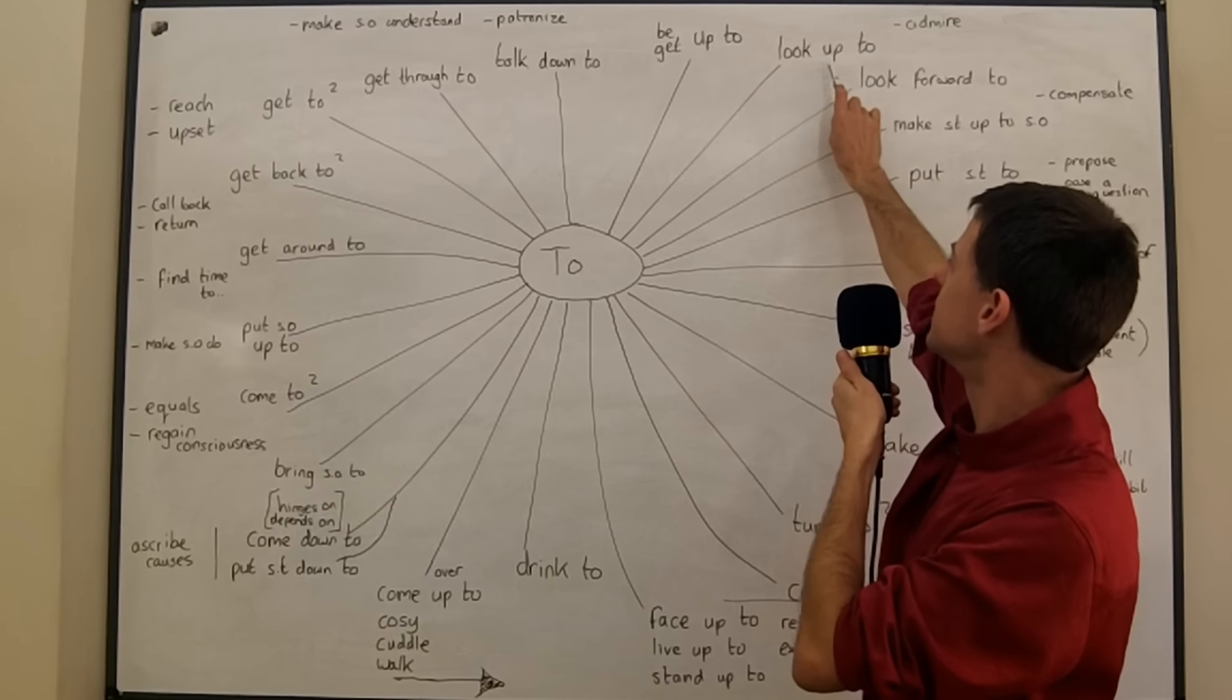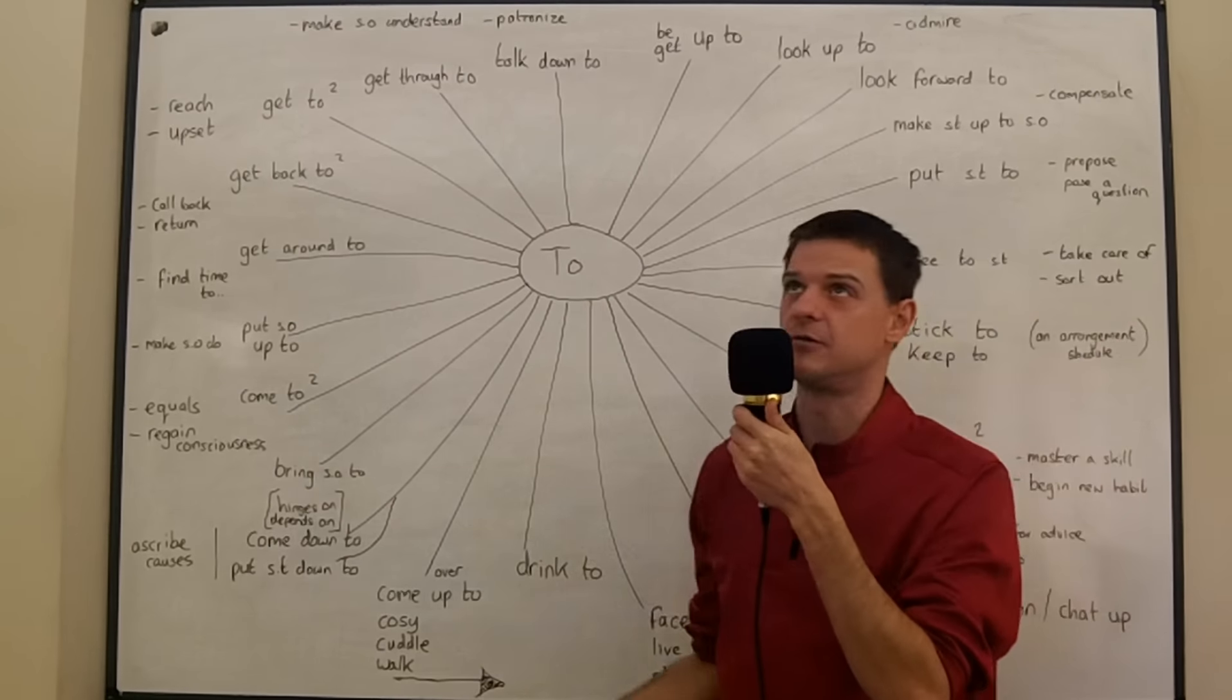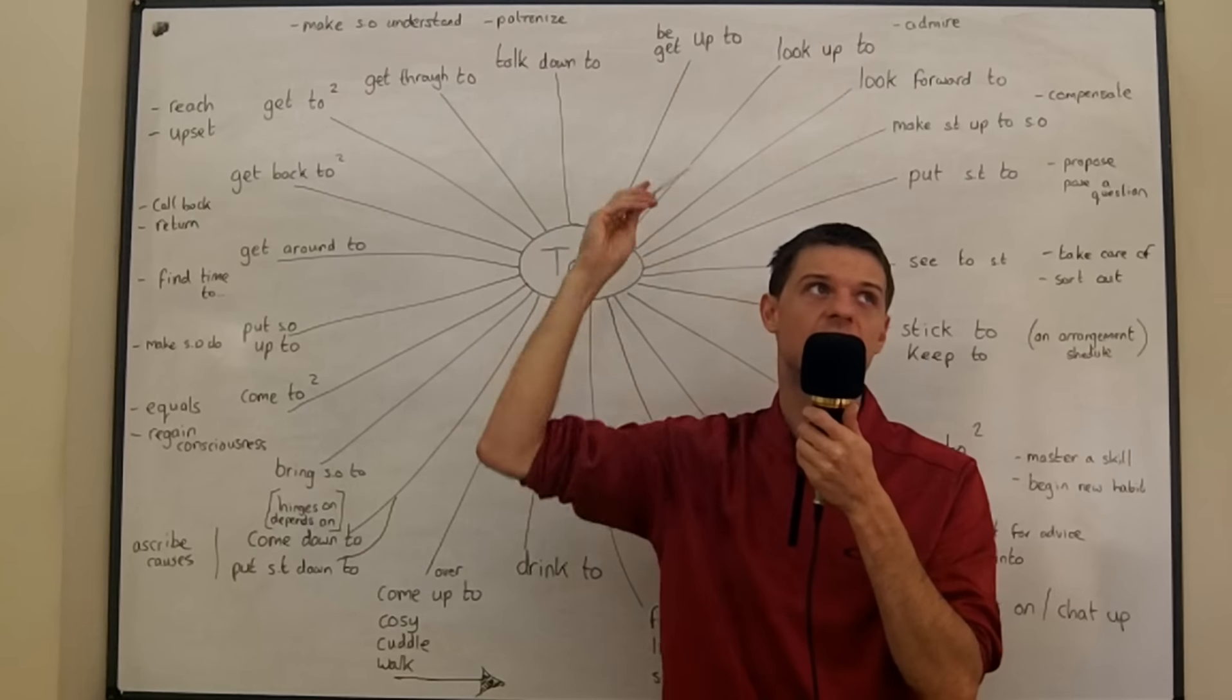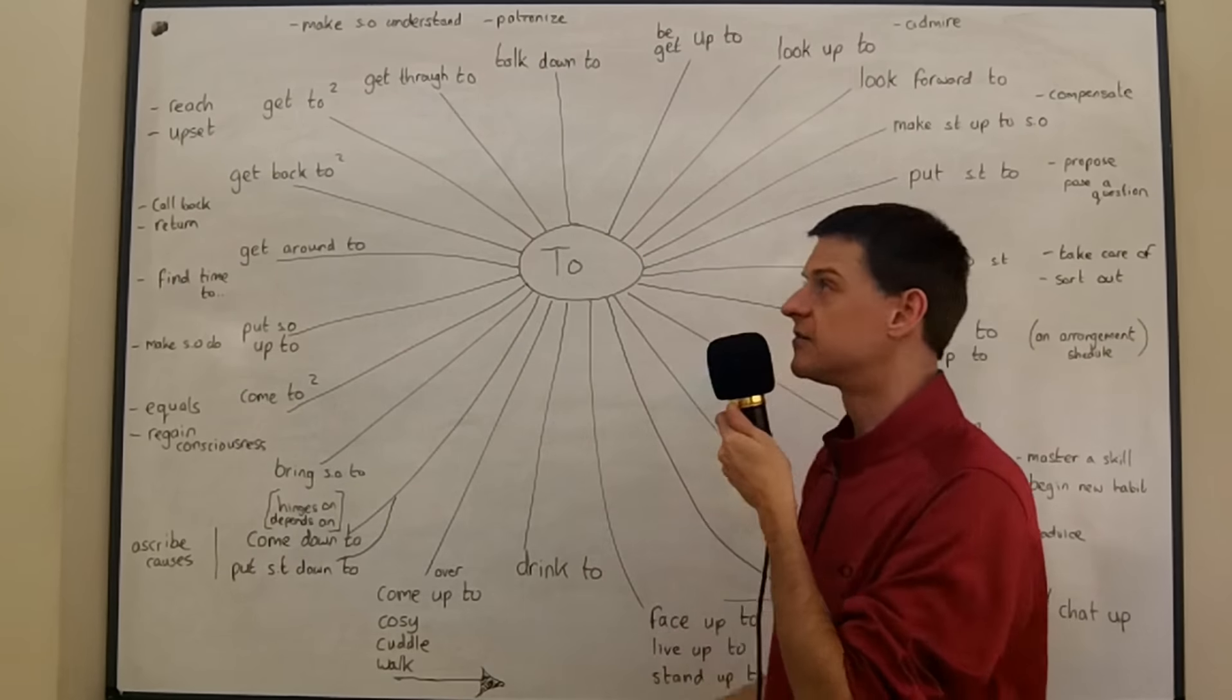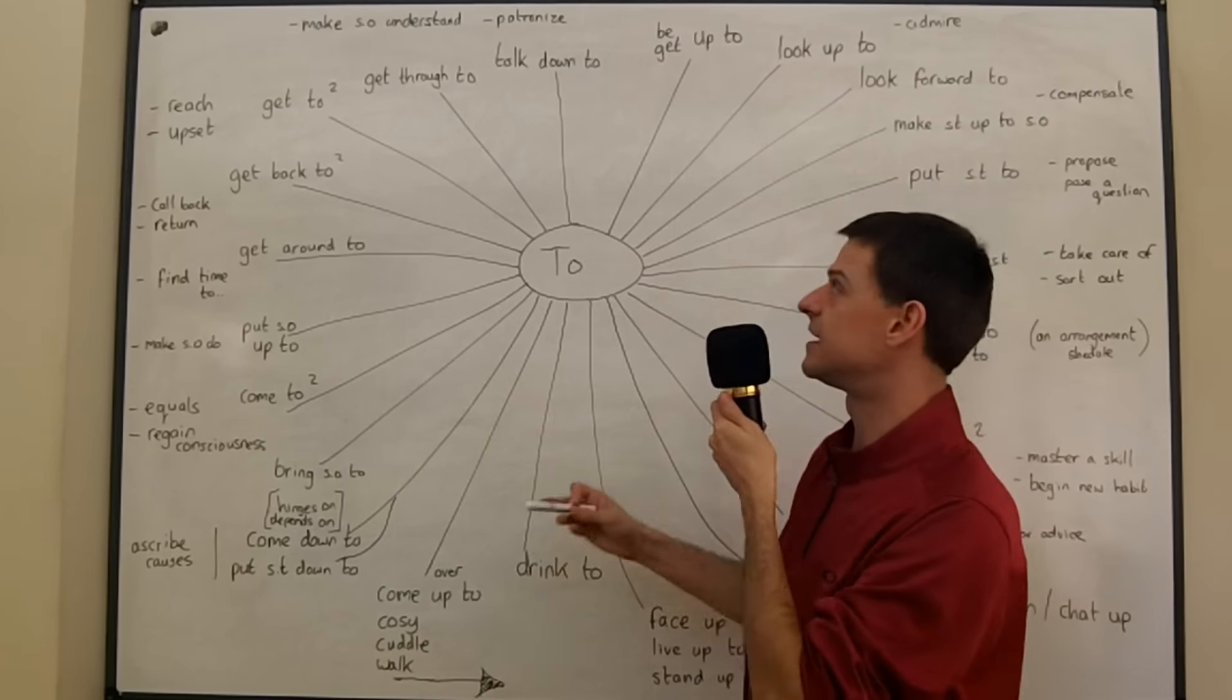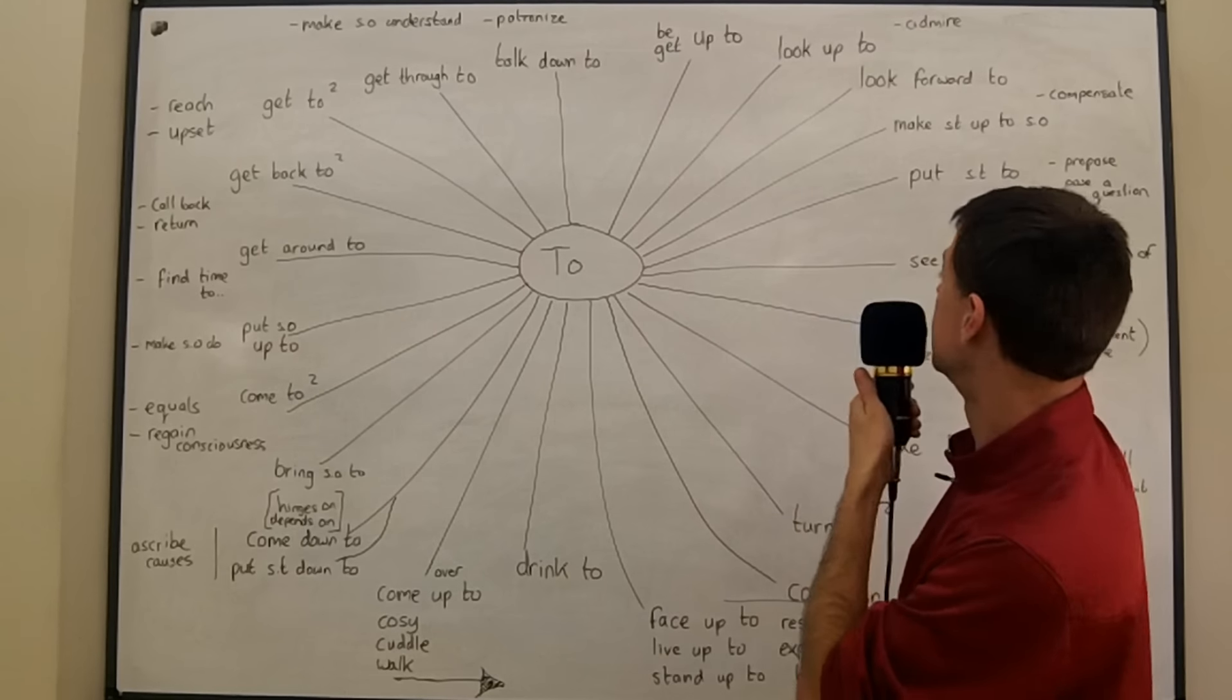Now we can also say we look up to our heroes, our role models, because when we say look up to we mean admire. So you might say I look up to this poet as a great writer.